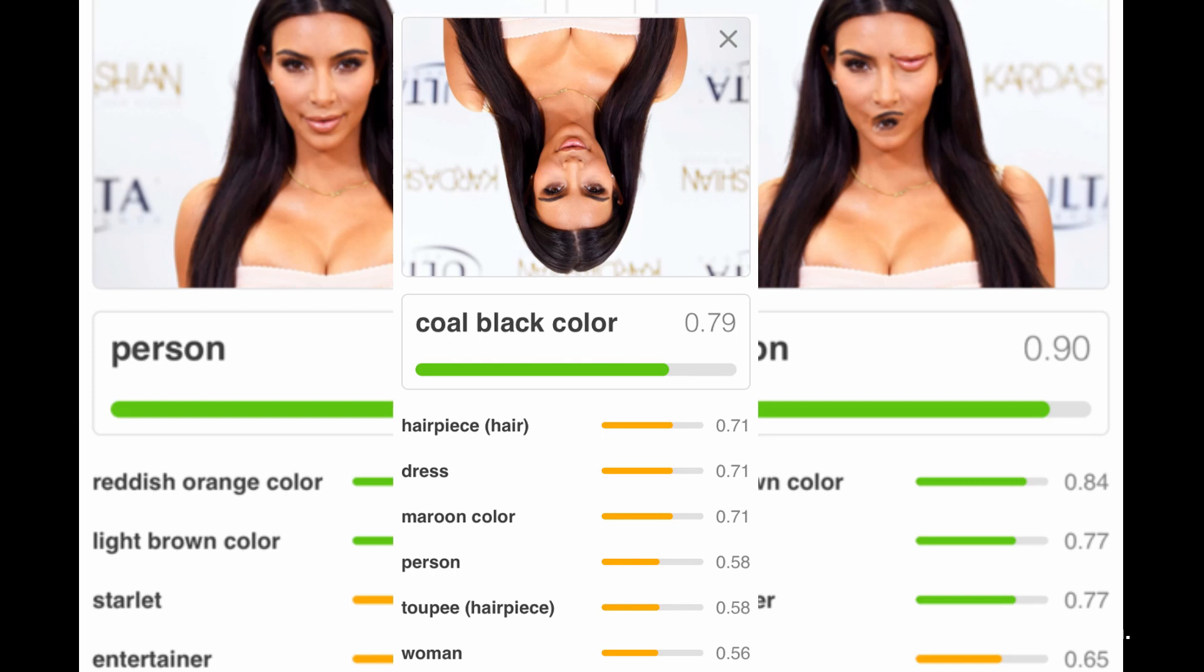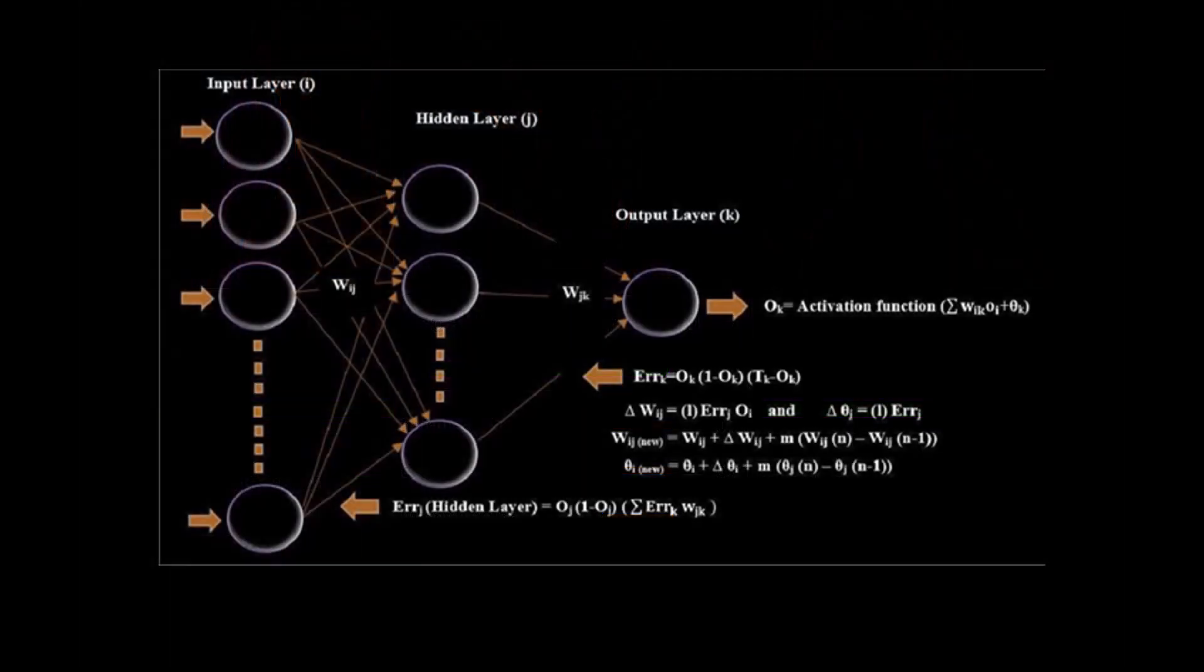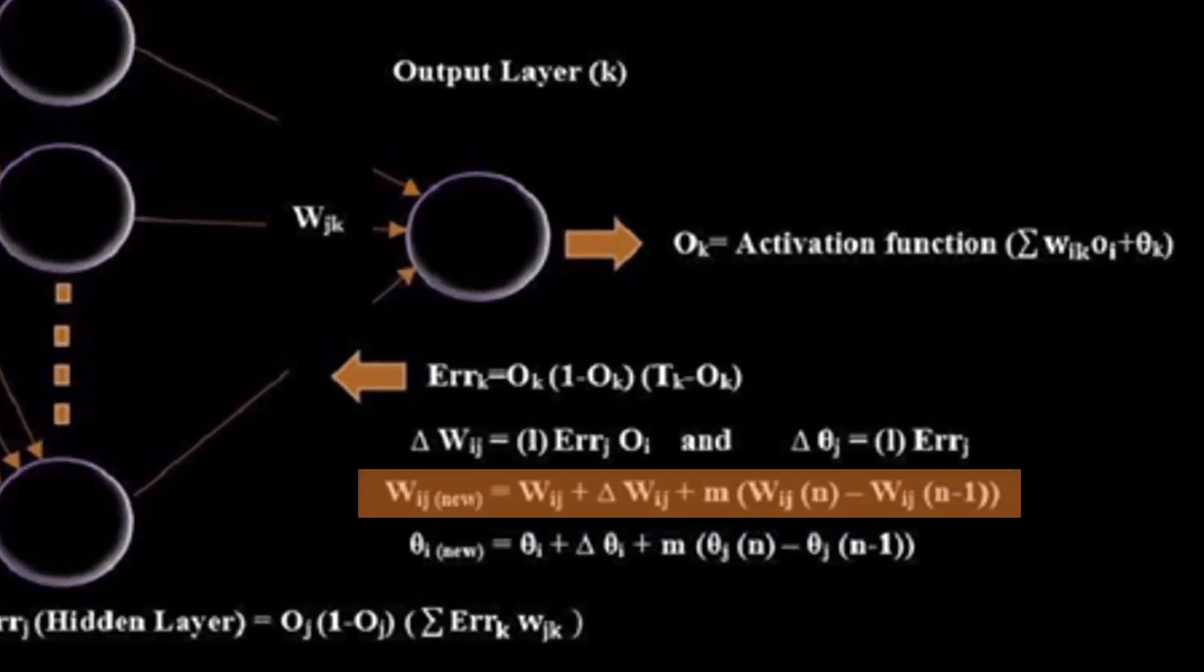But that's not my point. Backpropagation cannot possibly be representative of how neurons learn for two fundamental reasons. First, a quick look at the formula shows that it relies on knowing what current synapse weights are and being able to directly modify the weights of any synapse in the network with great precision. This is simply not possible in a biologically plausible world.